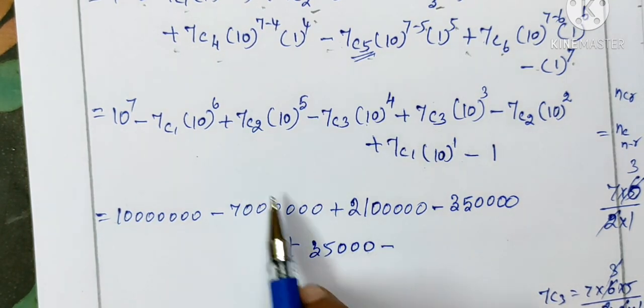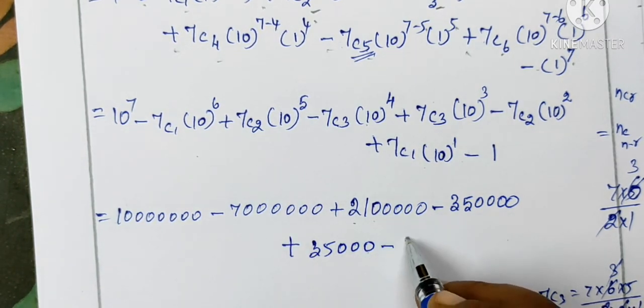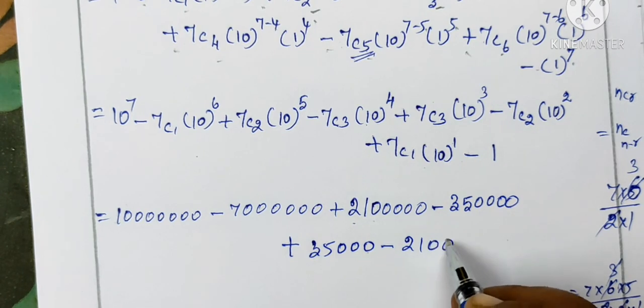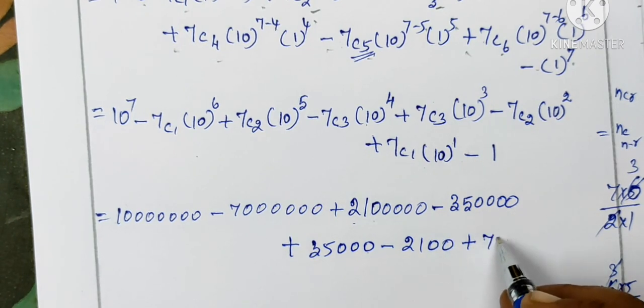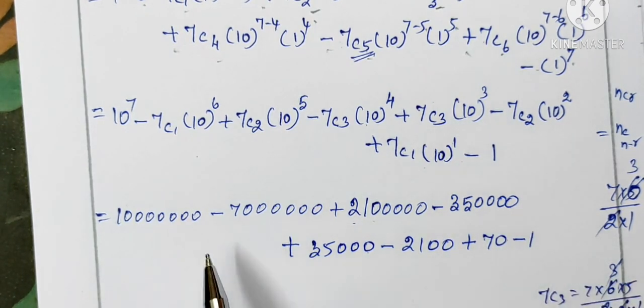So we have: 7C2 is 21, then 7C1 is 7, so 10 power 7 is 10000000 minus 7000000 plus 2100000 minus 350000 plus 35000 minus 2100 plus 70 minus 1.